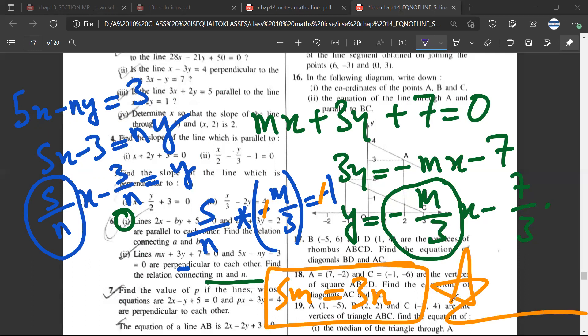Because they are perpendicular to each other, the product of slopes: 5 upon n times minus m upon 3 equals minus 1. The two minus signs cancel, giving 5m equals 3n. This is the relation.